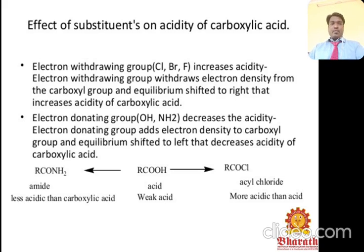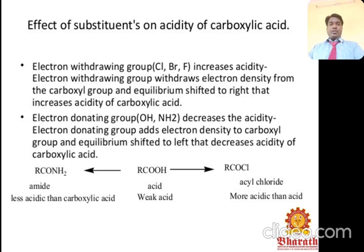Regarding the effect of substituents on acidity: electron-withdrawing groups such as chlorine, bromine, and fluorine increase the acidity. They withdraw electron density from the carboxyl group, shifting equilibrium to the right, increasing acidity. Electron-donating groups such as –OH decrease the acidity by adding electron density to the carboxyl group, shifting equilibrium to the left.